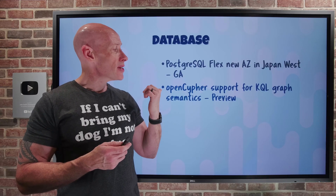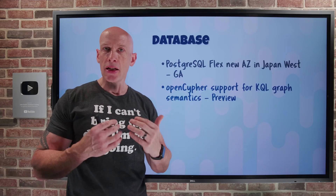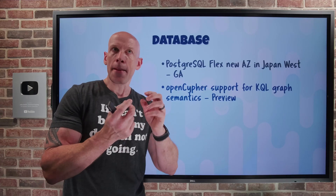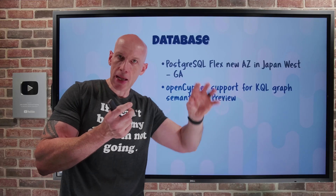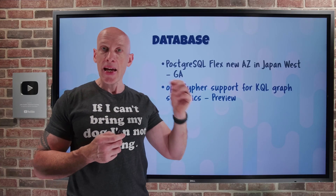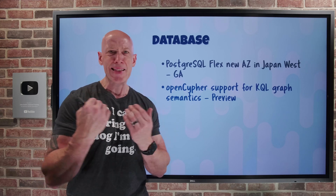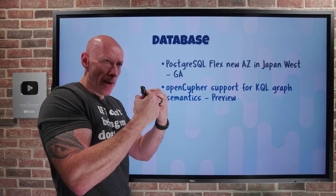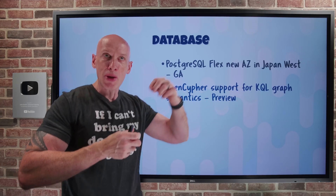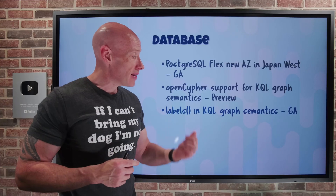OpenCypher support is now available for KQL graph semantics in Fabric Event House and Azure Data Explorer. Graph semantics is about relationships or edges between entities — such as a manager relationship or building assignment. OpenCypher is an open-source specification for querying graph databases; its pattern matching uses an ASCII art style where you create arrows between nodes to describe relationships. Labels in KQL graph semantics have also gone GA, letting you easily retrieve, filter, and project labels on nodes and edges in Azure Data Explorer.